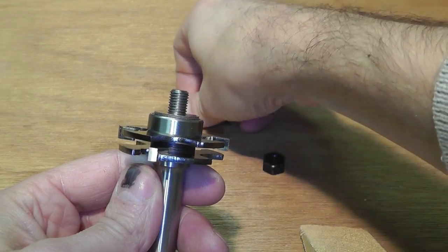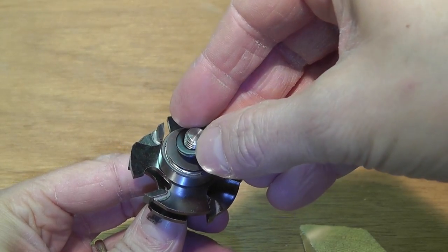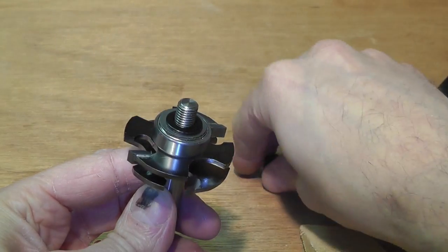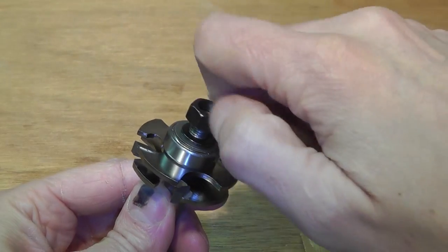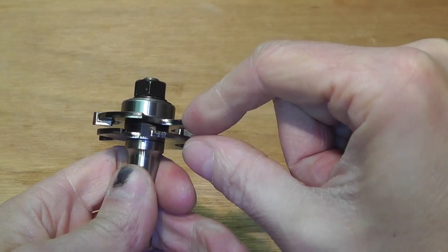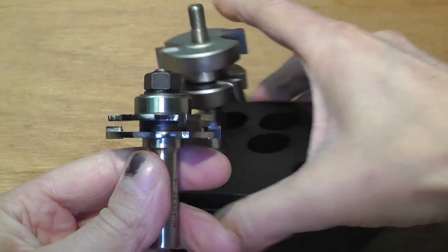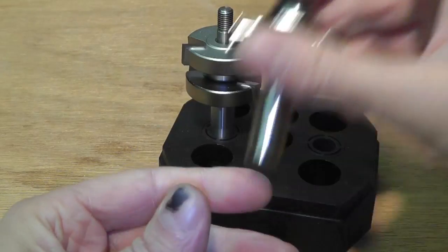I put all my spacers on here, and then I put this washer on top, and then I tighten it with the nut. Now I have this side ready with the four one millimeter spacers.